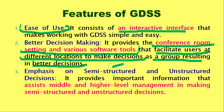The third feature of Group Decision Support System is that it emphasizes semi-structured and unstructured decisions, because both middle-level and higher-level management are using group decision support systems these days. They take various decisions that are either semi-structured or unstructured, depending upon the various levels of management requirements.